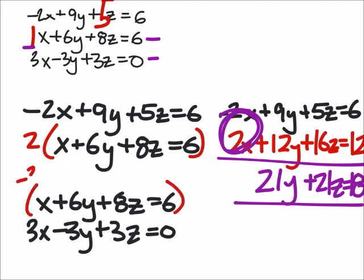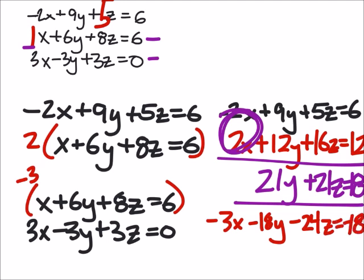Giving me a new equation: negative 3x minus 18y minus 24z equals negative 18. And that bottom equation stays the same.